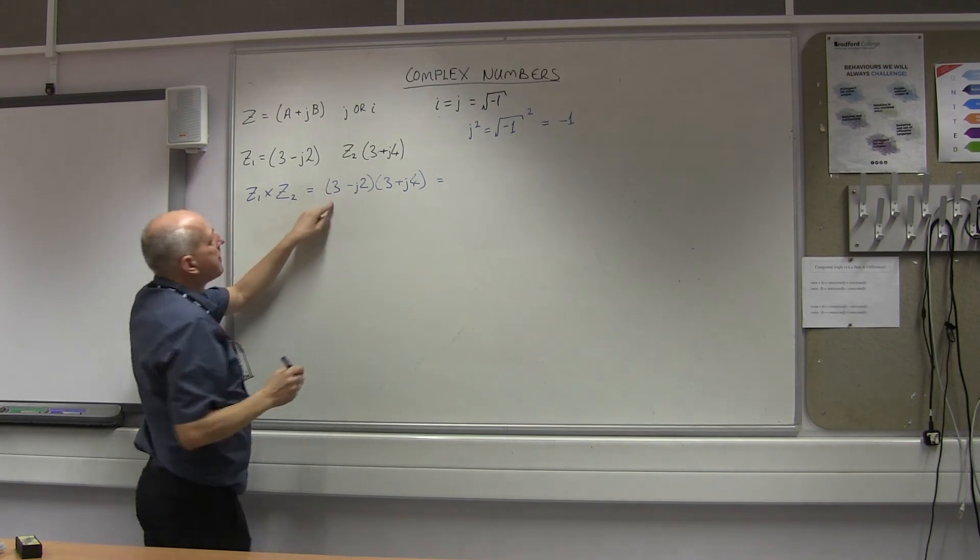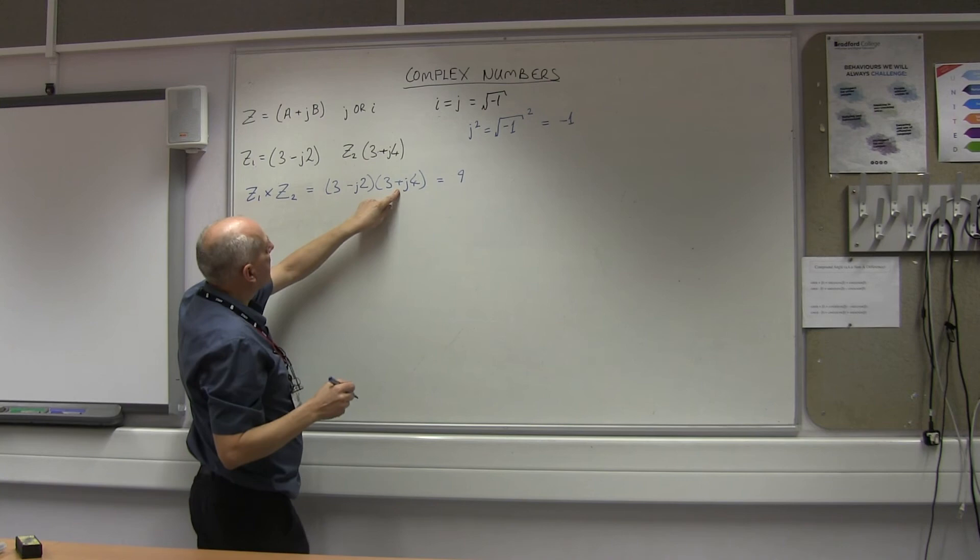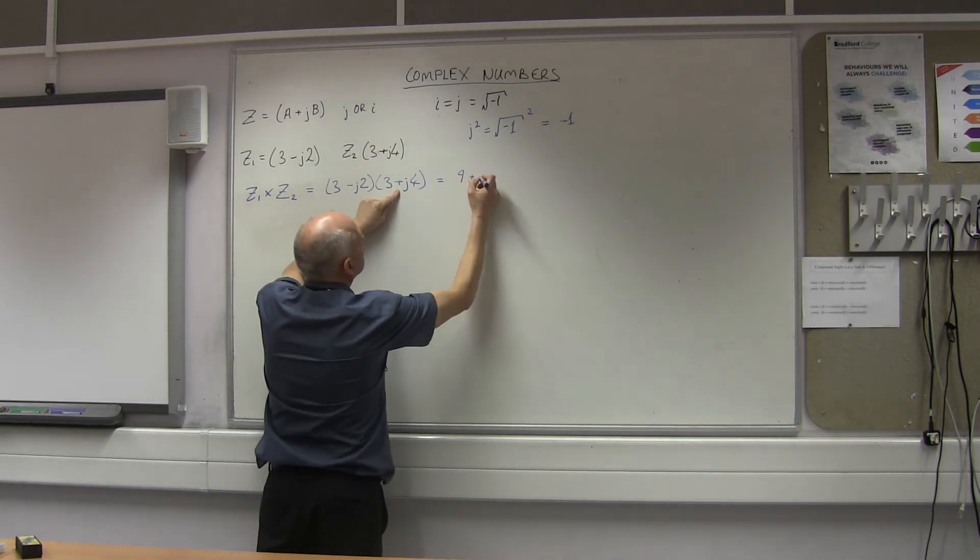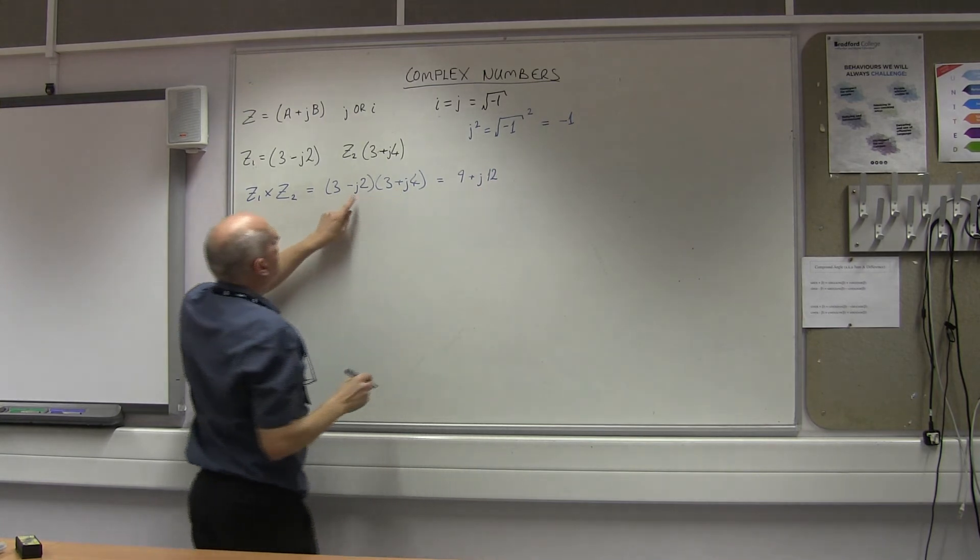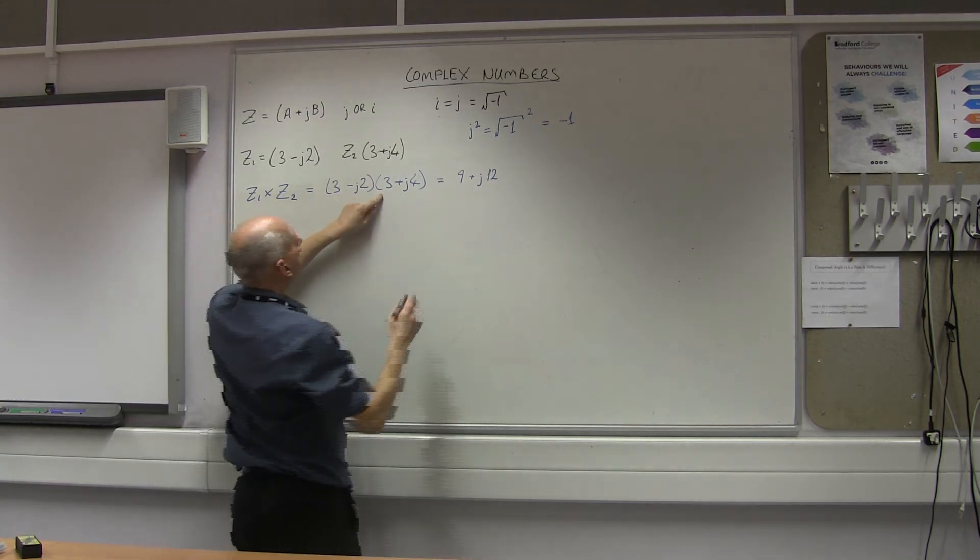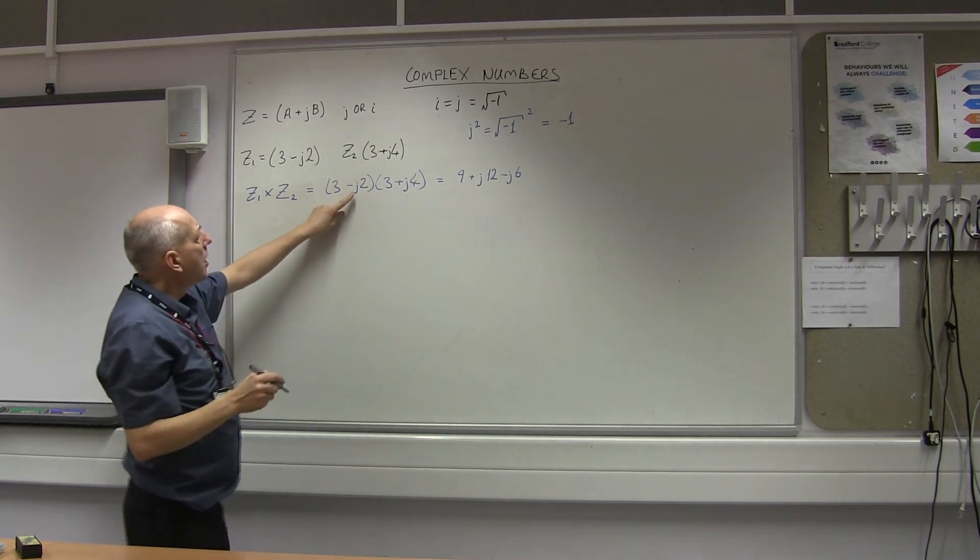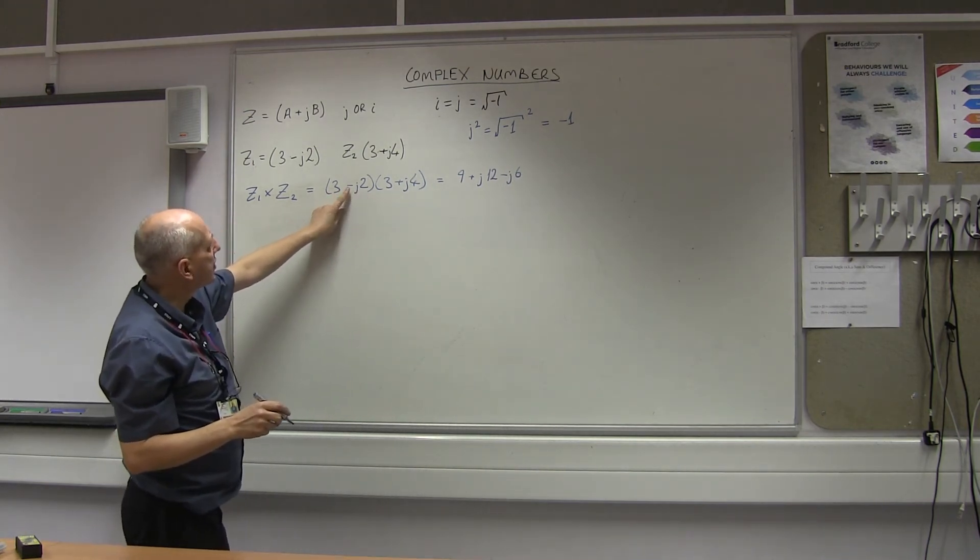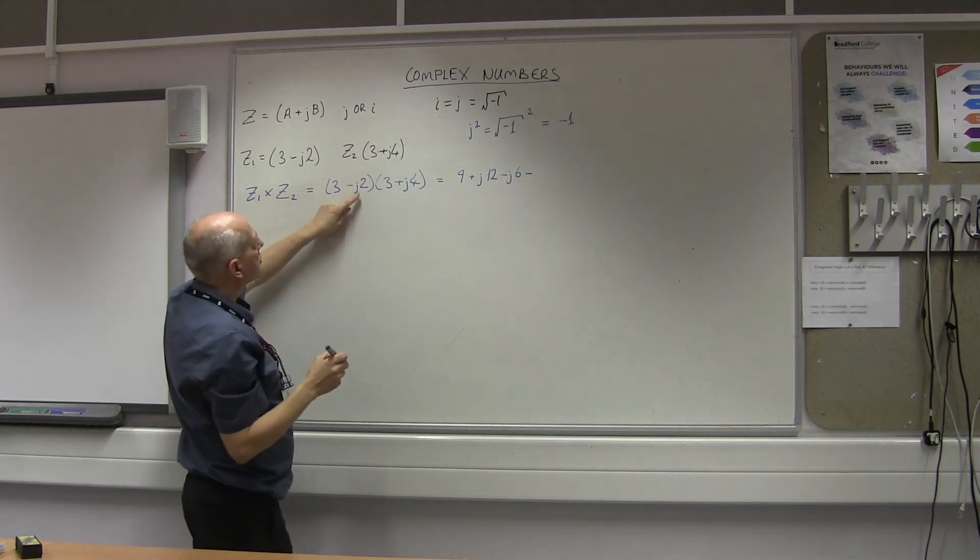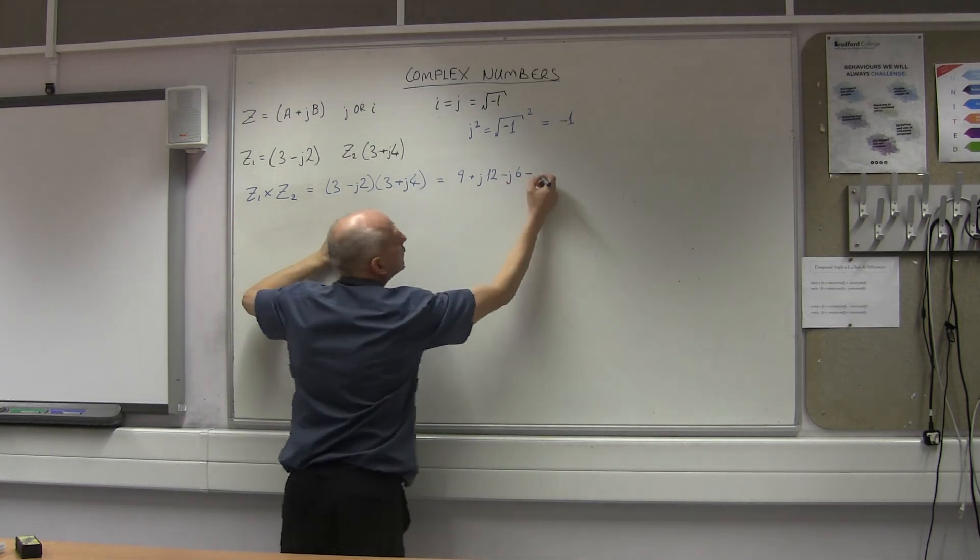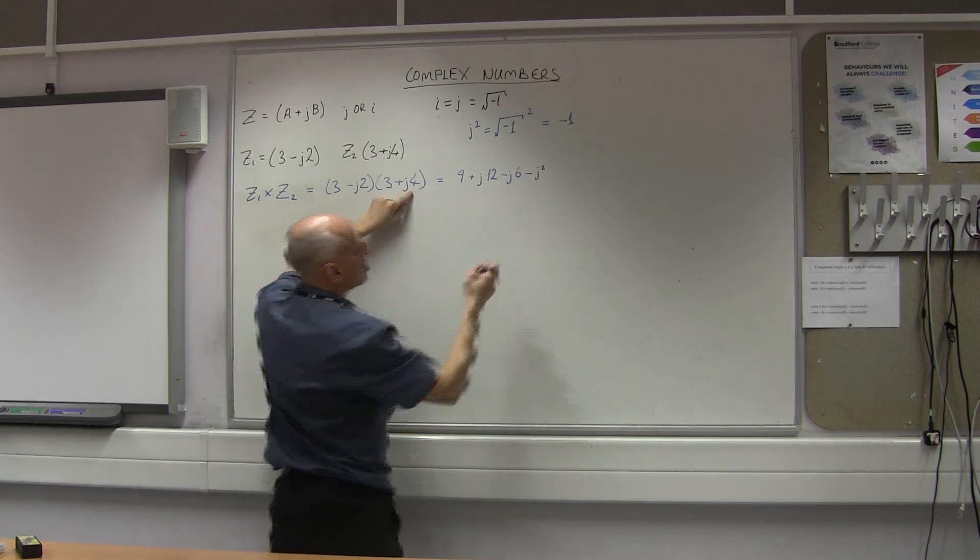So same again, 3 times 3 is 9. 3 times plus J4 is going to give me plus J12. Minus J2 times 3 is going to give me minus J6. And then we've got the last stage. So minus times a plus will give me minus. So I've got minus J squared times 8. And then I've got 2 times 4 which is 8.